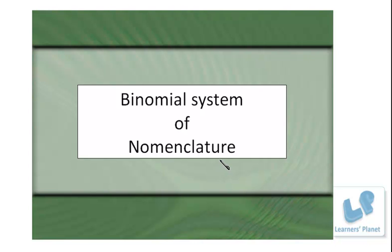What is meant by nomenclature? When we are studying about the diversity of living organisms, nomenclature means the scientific and systematic method of assigning names to living organisms. You must have studied about nomenclature in chemistry also, where it is related to inorganic or organic compounds. But this binomial system of nomenclature is completely related to living organisms.